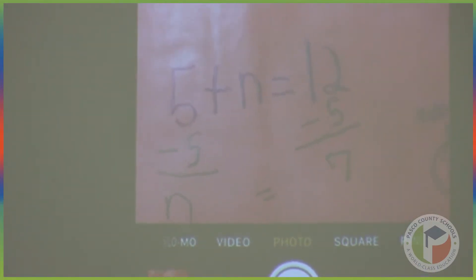So we knew that our variable was n, and then we did 5 plus n equals 12, because that was our equation that we picked up from the problem. It says that they ate 12 altogether, so we knew that would be our answer. We knew that 5 plus the variable would be equal to 12.